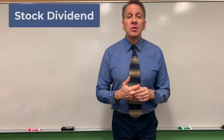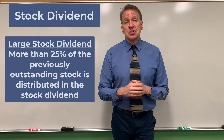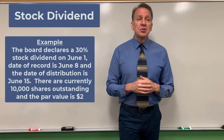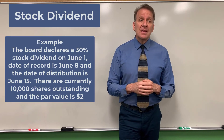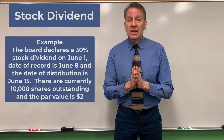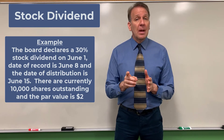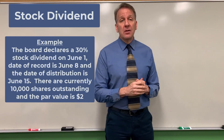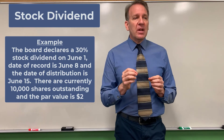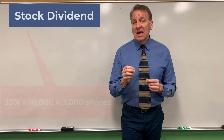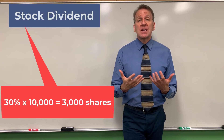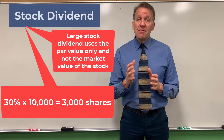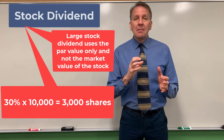A large stock dividend is when we distribute more than 25% of the currently outstanding shares. Let's look at this example: a 30% stock dividend on June 1st, date of record June 8th, and date of distribution June 15th. There are currently 10,000 shares and the par value is $2 per share — a different corporation. Distributing 30% means 30% times 10,000 shares, which equals 3,000 shares. For a large stock dividend, we do not look at current market value; we calculate using the par value only, with no paid-in capital in excess of par.